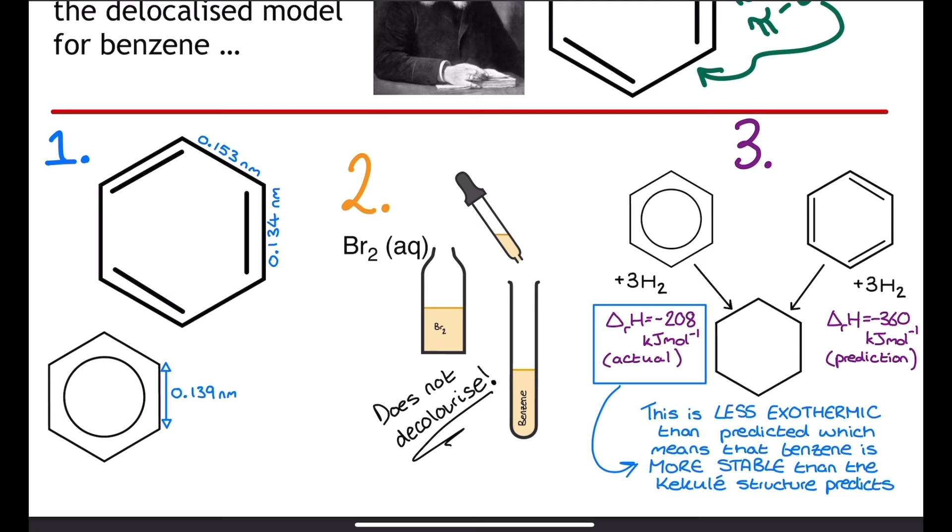The first piece of evidence down here which debunked Kekulé's suggestion for the structure of benzene is quite simple. Carbon to carbon single bonds are longer than carbon to carbon double bonds, so Kekulé's suggestion would have a pattern of different distances between the carbon atoms all the way around. In actual benzene, it was found that there is an equivalent bond length between the carbons all the way around the structure.